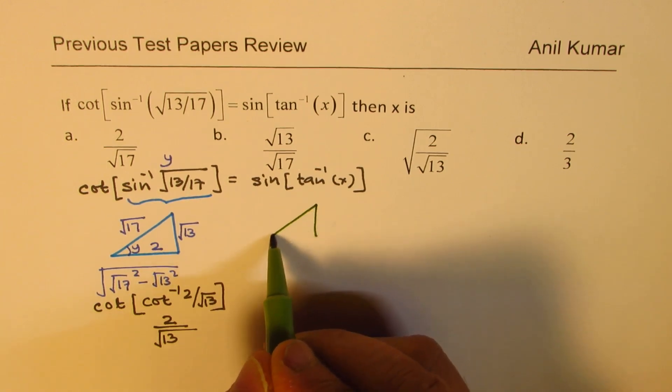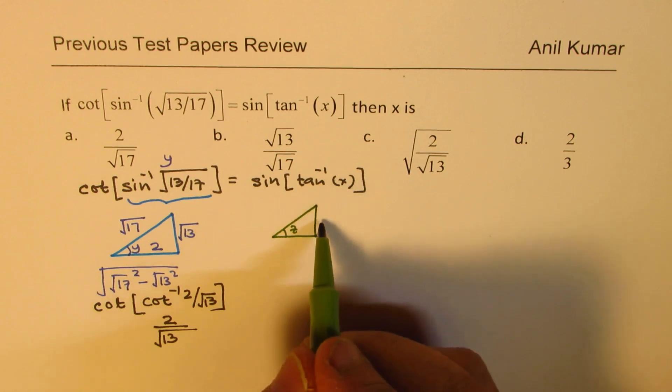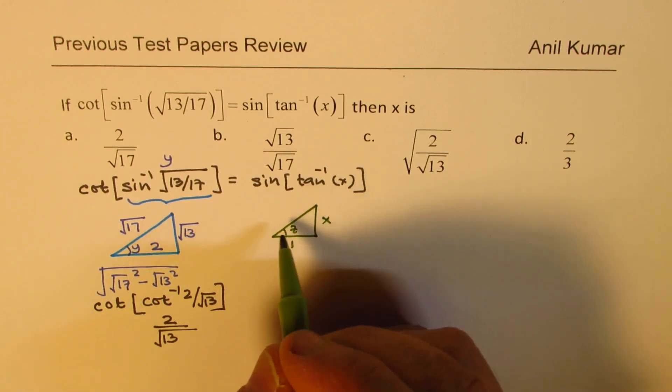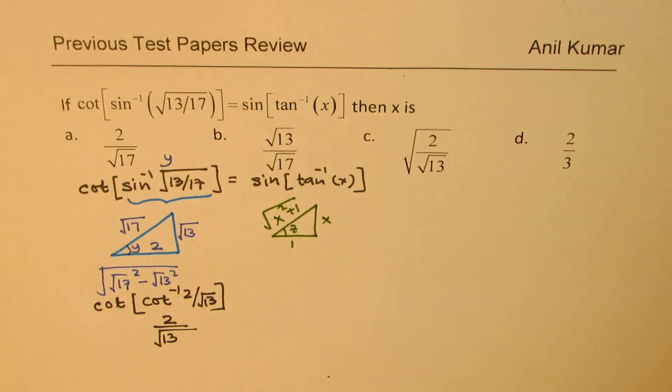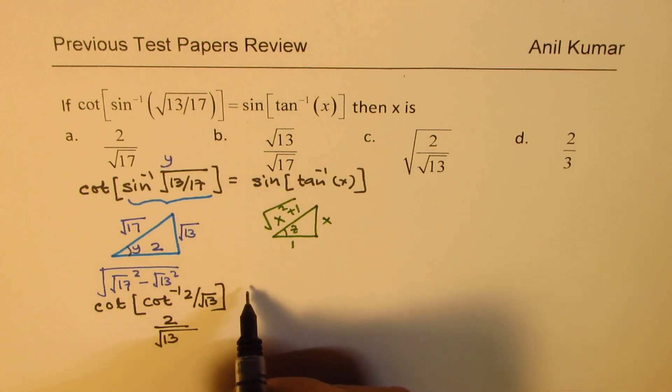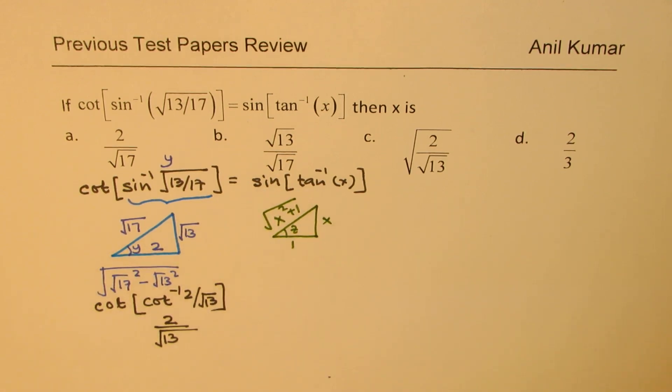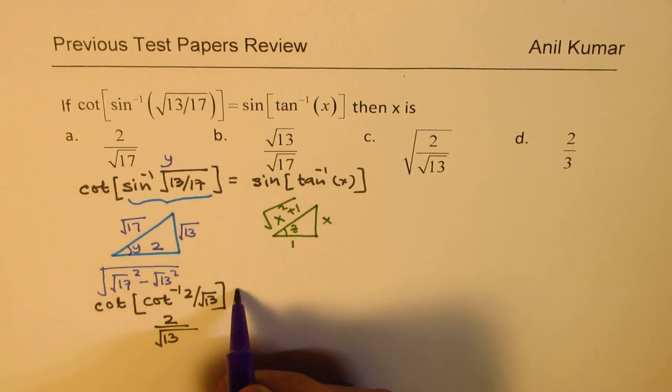Tan inverse x means, let's say this angle is z. In that case, tan inverse x, and this is x, and this is square root of x square plus 1. Now looking into this, we can see that the right side basically is, let's write equal to in between because these are the two sides we are working with.